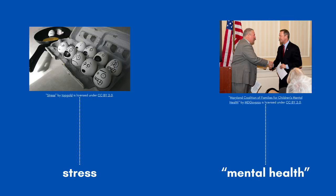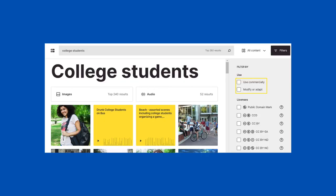Words like stress and mental health might not give you the results you're looking for. Both of the images here are in OpenVerse under those keywords and don't make any sense with the research question. Remember to think broadly. When in OpenVerse, search your keyword in the search bar — on the right side are the filters.